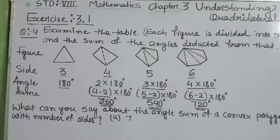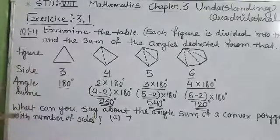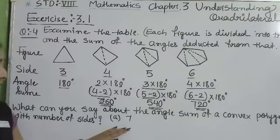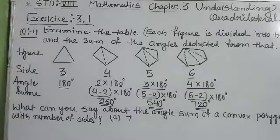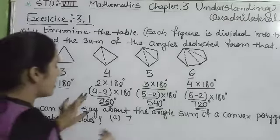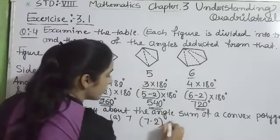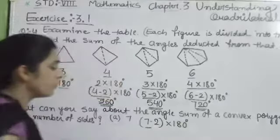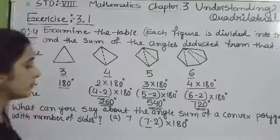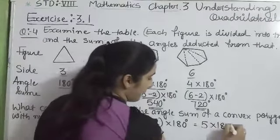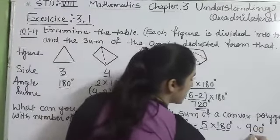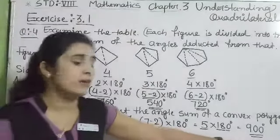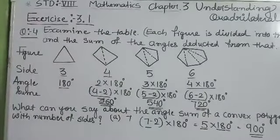Now what can we say about the angle sum of a convex polygon with number of sides? First, here is 7 sides. We have given the number of sides, so 7 minus 2 into 180. That means number of sides, 7 minus 2 is equal to 5 multiplied by 180. So 5 times 18 is equal to 90, add 0, so this is 900 degrees for 7-sided.